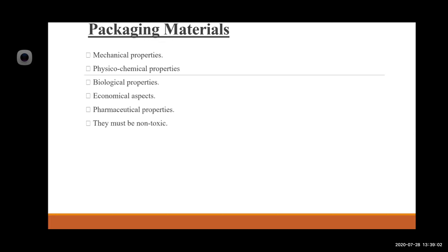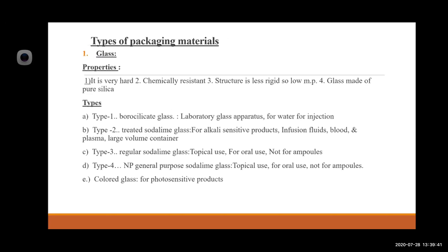Regarding packaging materials, the properties to consider are mechanical, physical, chemical, biological, economical, and pharmaceutical properties. Materials must be non-toxic. The first commonly used packaging material is glass.